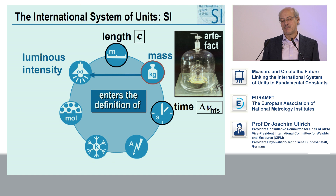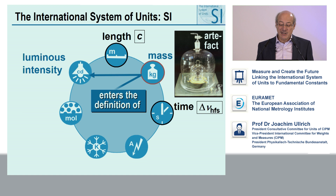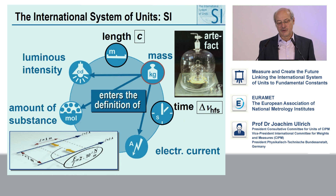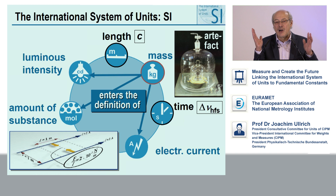It's even worse because the kilogram enters into the definition of luminous intensity — in the watt, we have the kilogram. It directly enters the definition of the amount of substance, the mole, because that is 12 grams of carbon, or the entities in 12 grams of carbon. And it enters the old definition of the ampere, of electric current, which was defined by the force between two infinitely long conductors with an infinitely small diameter — in the force, we have the kilogram as well.